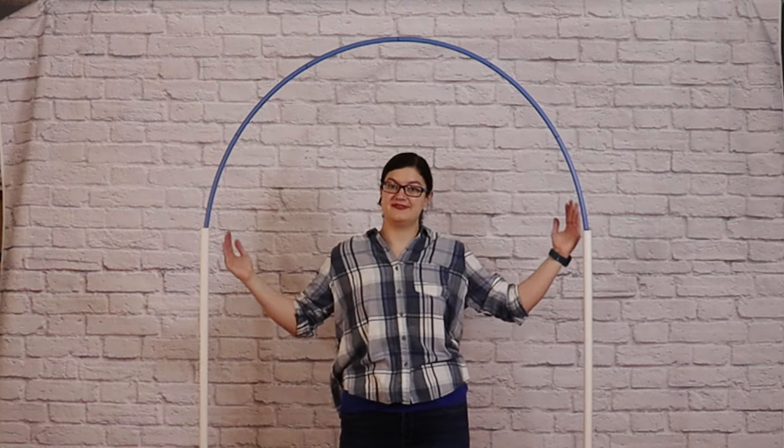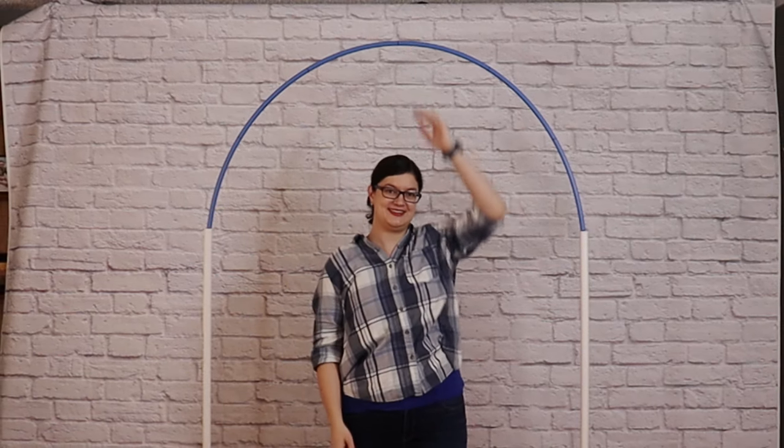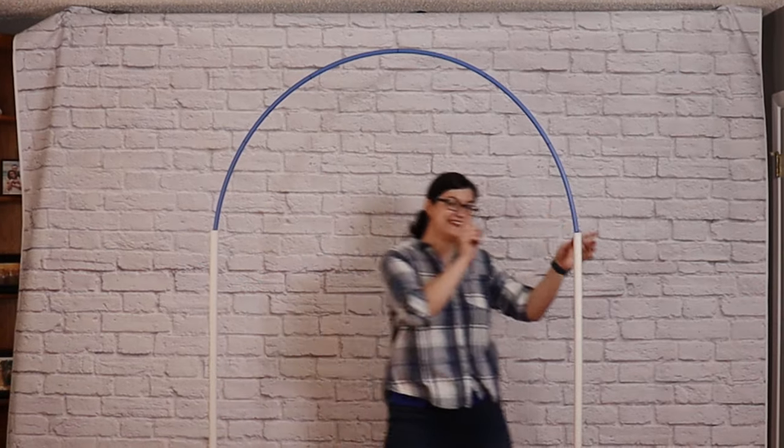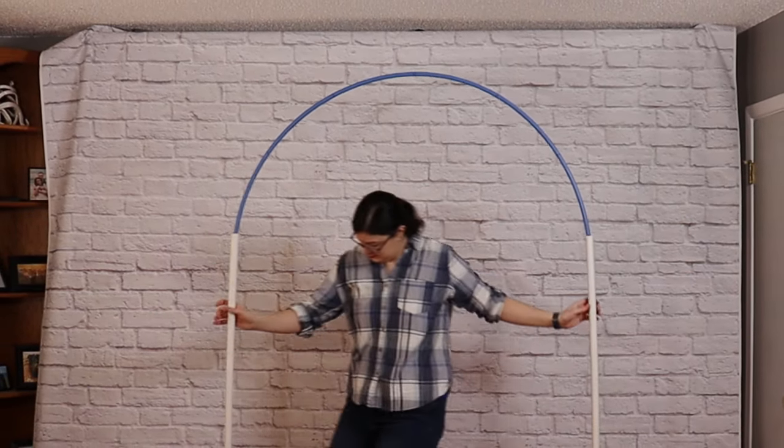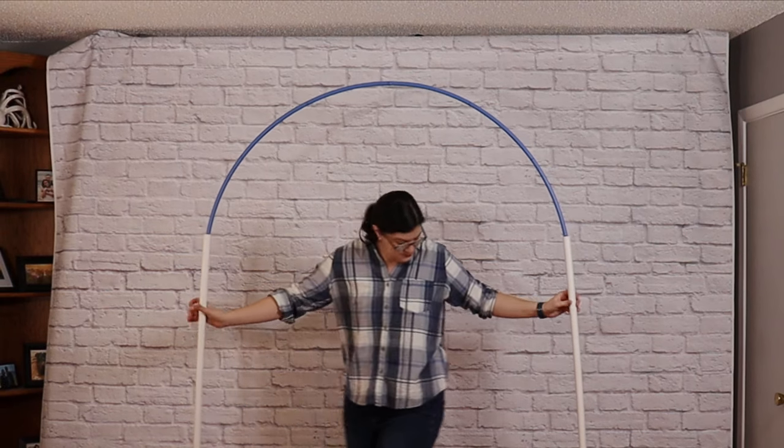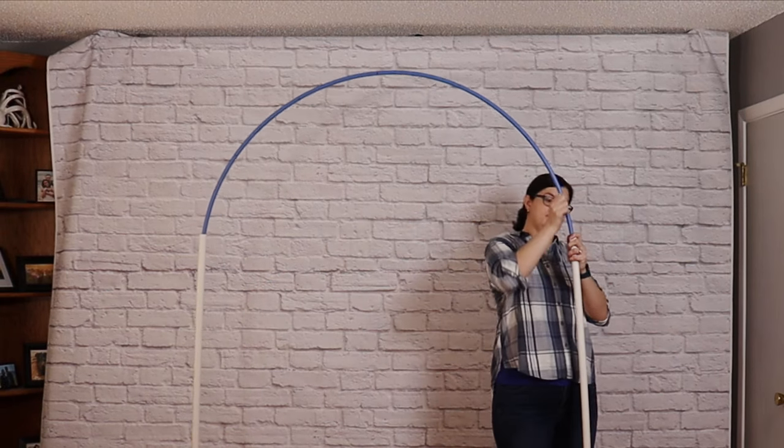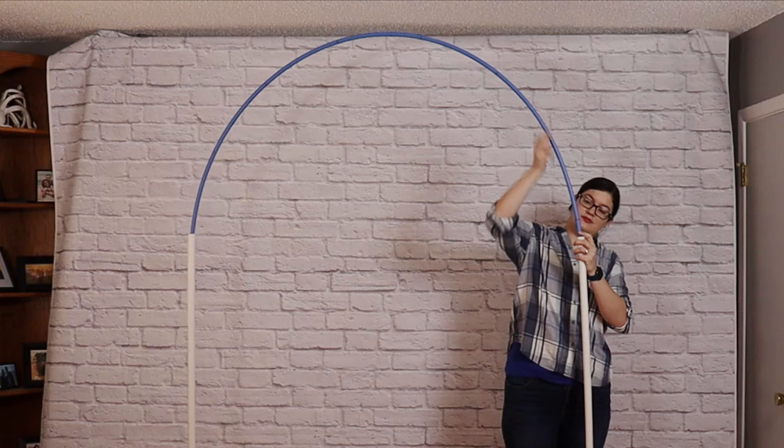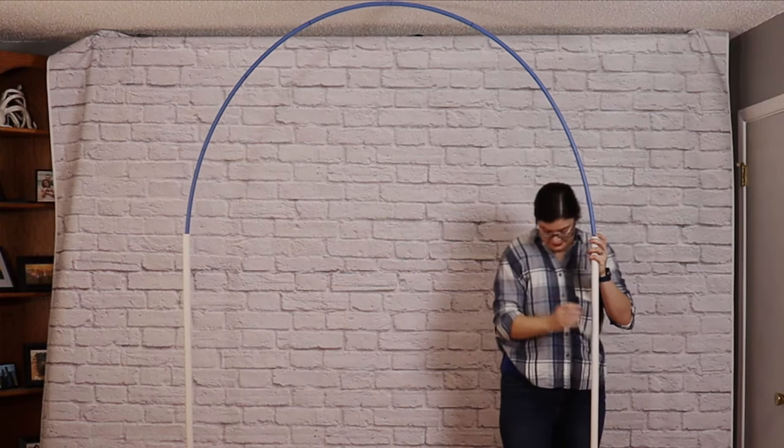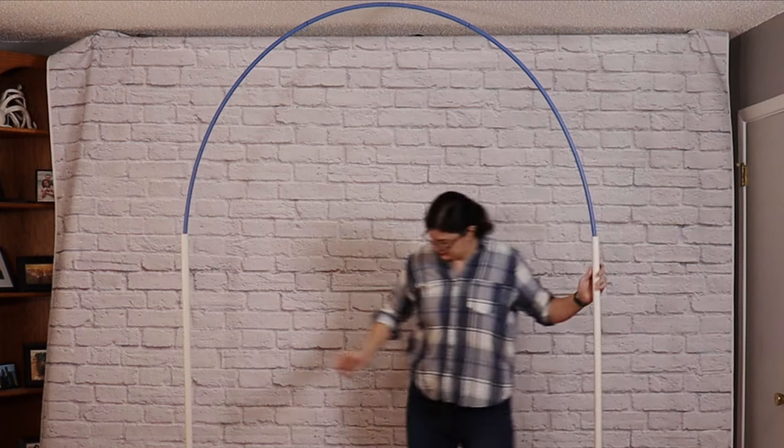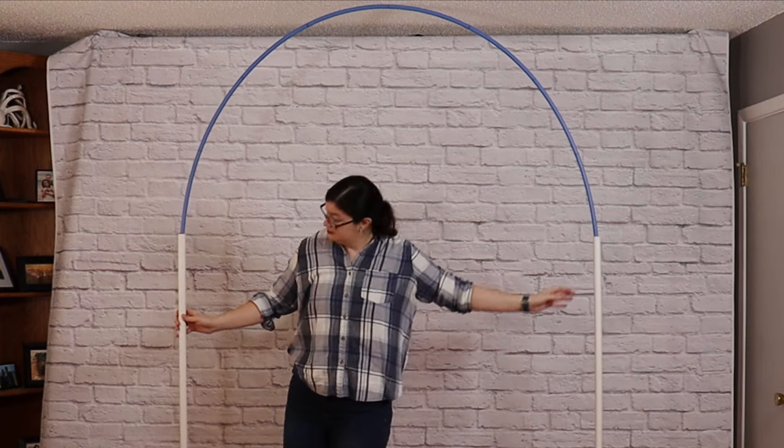Now earlier I promised to show you some different sizing. So this is four feet wide and seven feet tall at the moment. But if I nudge the bases so they're five feet apart, and then if I adjust the PEX pipe so that there's only one foot of PEX inside each PVC pipe, giving me a total of eight feet to create that nice curve at the top, that will give me a total arch size of five feet wide by eight feet tall.